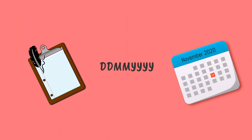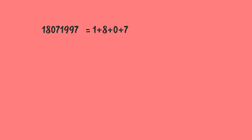Now let us take an example. Take a piece of paper and a pen and write down your date of birth in the format ddmmyyyy. I am considering 5 people and their birthdays as shown on the screen in the same format. Now add all the digits of the number to get another number, and if the new number is not a single digit, add all the digits again and again until we get a single digit number.